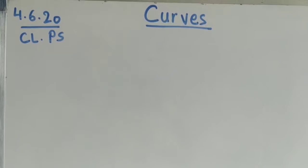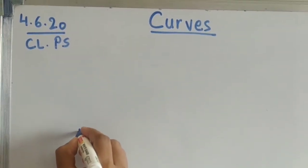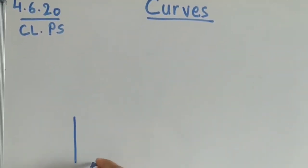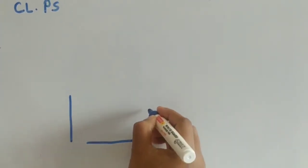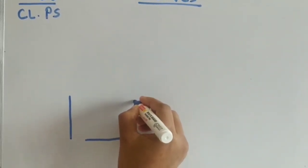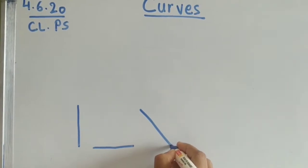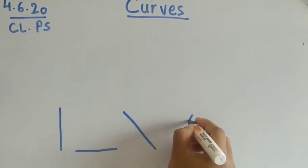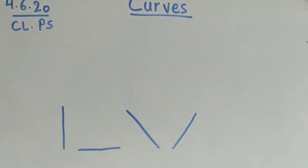What are those lines? Standing line, sleeping line, then left to right slanting line, right to left slanting line.